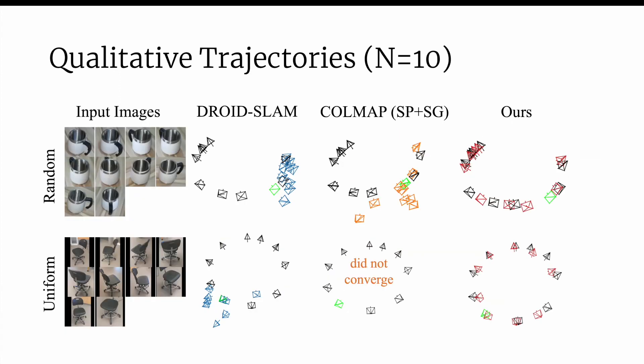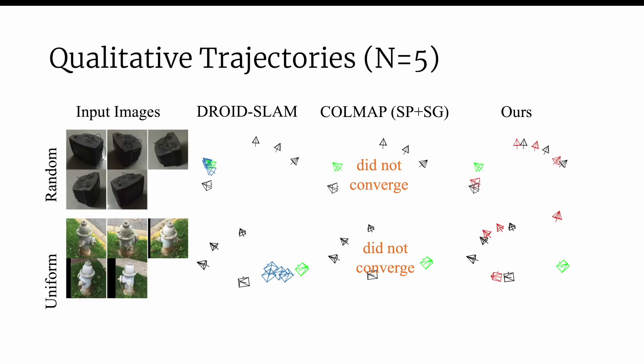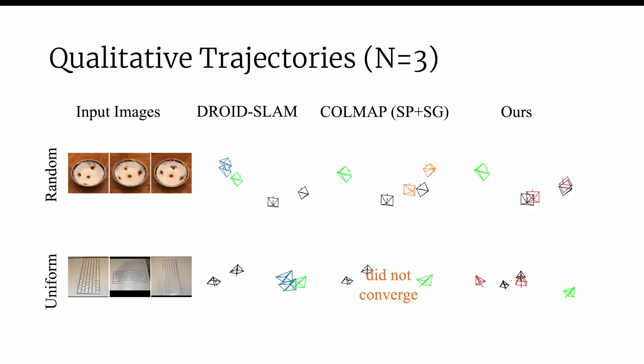Given 10 images, the correspondence-based approaches struggle to converge, whereas our methods continue to output reasonable but approximate poses. For 5 and 3 images, only our approach outputs anything reasonable.